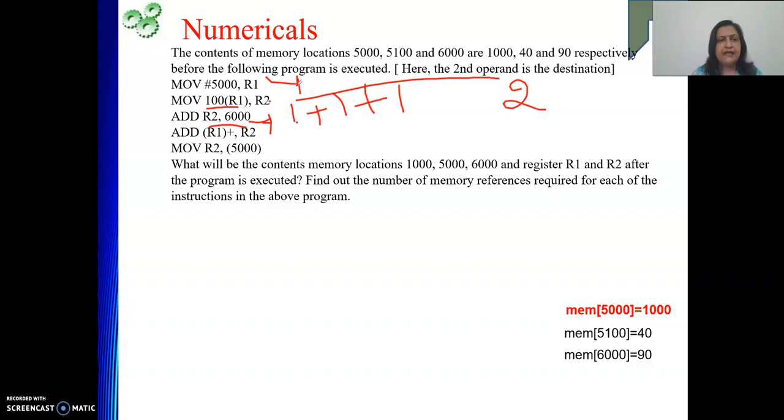Then next one, ADD R1+, R2. This one is auto increment addressing mode. Here data is in memory. Where is the address? In register R1. But there only the story is not going to end. After taking R1's content as effective address, we need to increment R1 to point to the next element in the list.